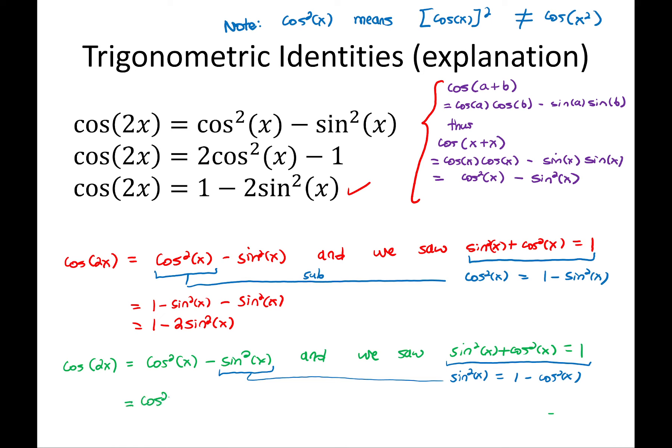So cos squared of x minus bracket 1 minus cos squared of x. We have a double negative. We'll be careful with that. Cos squared of x minus 1 minus minus 0 plus cos squared of x. Now we have an apple minus 1 plus another apple. That's going to be 2 apples. So 2 cos squared of x minus 1. And that would be the second formula.